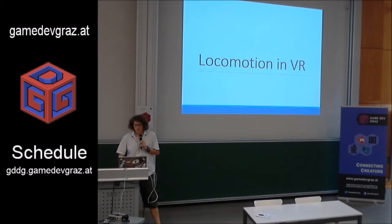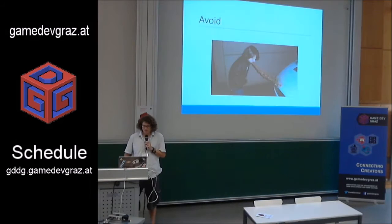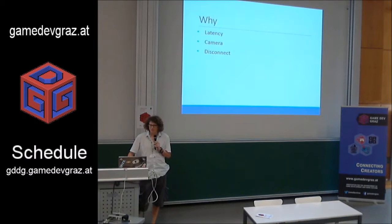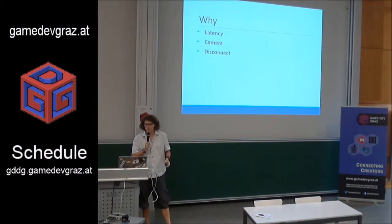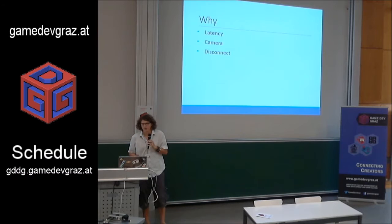Today we're going to talk about how to avoid VR sickness. So let's first talk about why this actually happens. There are three main reasons. The first one is a technical reason: latency. Latency deals with the tracking of the VR headset being slightly off or too slow, or if the rendering is too slow. The general rule is that your game needs to render 90 frames per second twice, for the left eye and right eye. So that's quite a challenge.